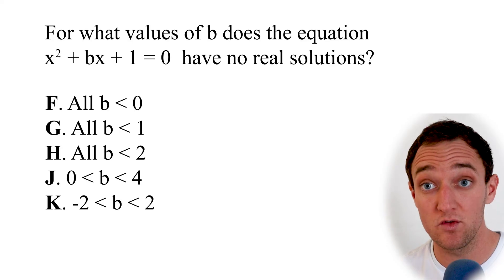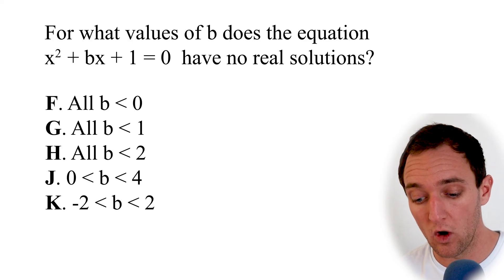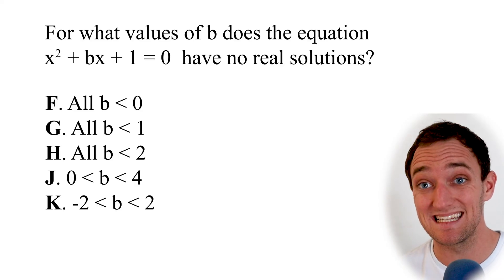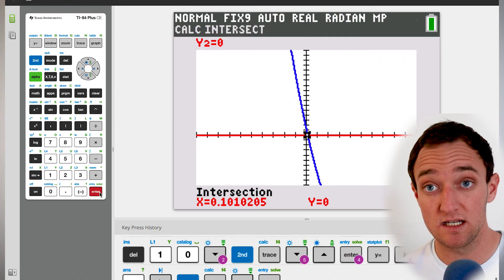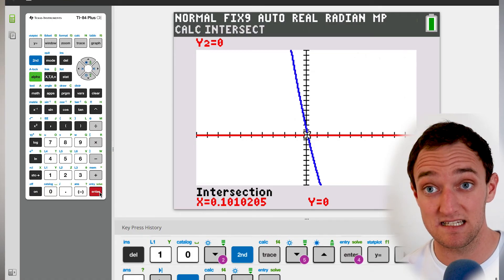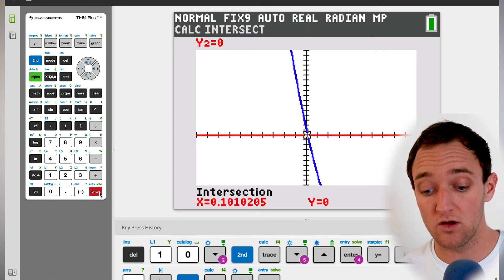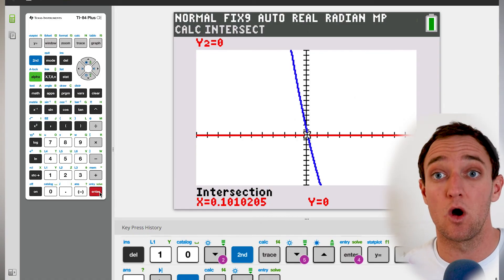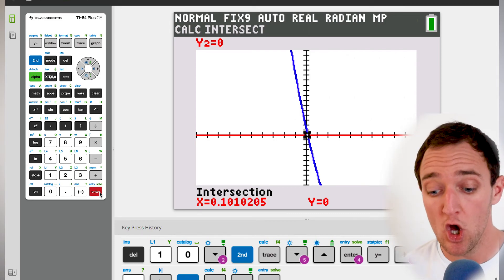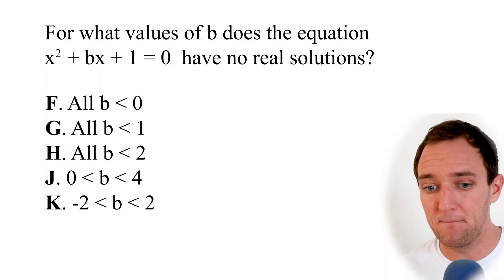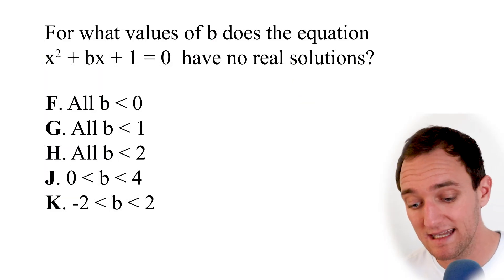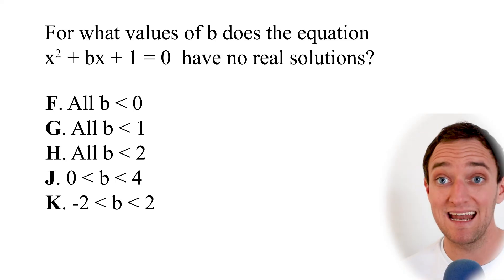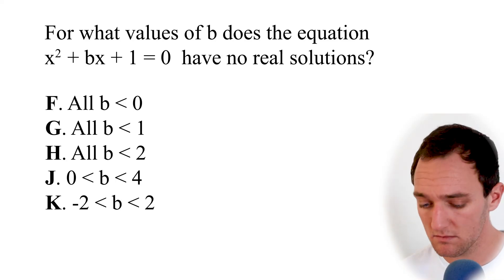Now this negative 10 is a really useful number because if we look at our first few answers here, our first answer: all values of B where B is less than zero, all values of B where B is less than one, all values of B where B is less than two. If we chose negative 10, that is a value that is less than zero, it's a value that's less than one, and it's a value that's less than two. And all of those are only going to work if it's any B that's less than - all Bs that are less than zero, all Bs that are less than one, and all Bs that are less than two. So we can actually, because negative 10 gave us a solution here, we can eliminate F, G, and H just with that one test. Super easy.